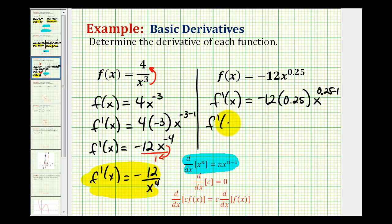So let's go ahead and simplify this. Negative 12 times 0.25 that's going to be negative 3. And our exponent is 0.25 minus 1 that's going to be negative 0.75.